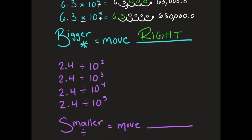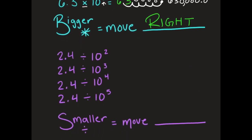Now we're going to do the opposite — we're going to get smaller by dividing. I have 2 and 4 tenths, and I'm getting smaller by 2. I take that decimal point and move it one time smaller, then another time smaller, filling in with a zero. So I have 0 and 24 thousandths.